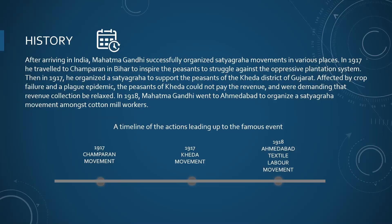The same year, he organized the Satyagraha movement in support of the peasants of the Kheda district of Gujarat, known as the Kheda movement, where the peasants were unable to pay revenue because of poor crop and plague epidemic. The Satyagraha was in demand for the relaxation of tax collection. In 1918, Mahatma Gandhi went to Ahmedabad to organize the Ahmedabad textile labor movement among the cotton mill workers.